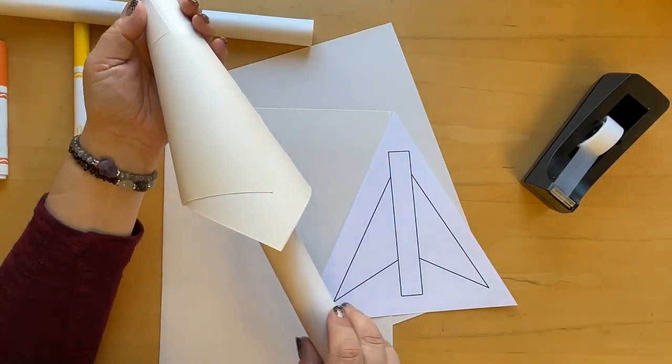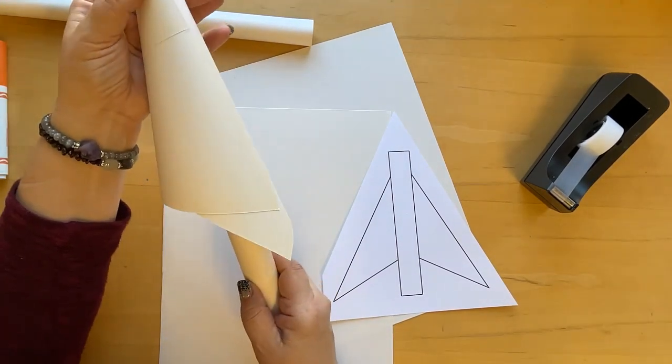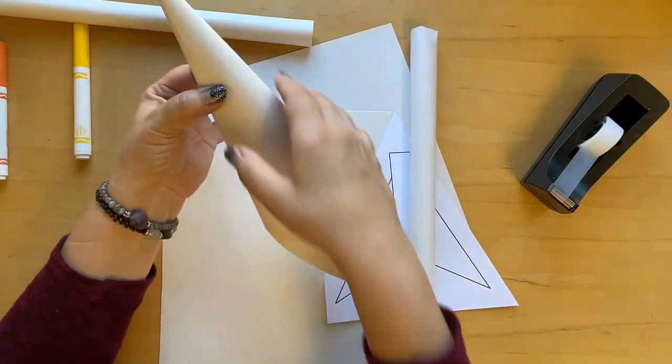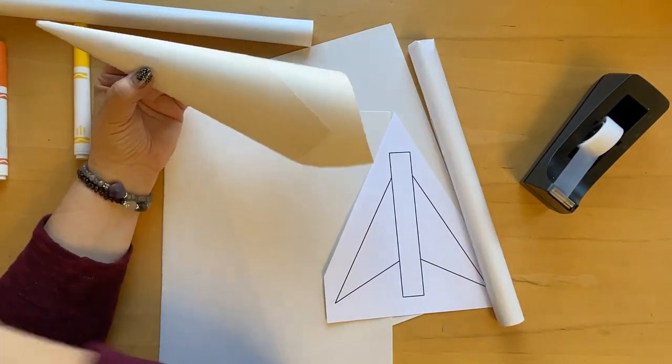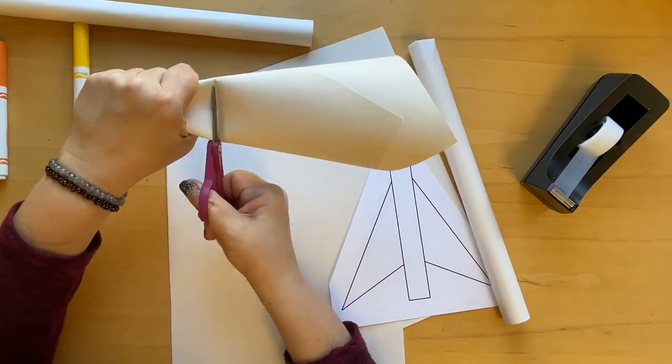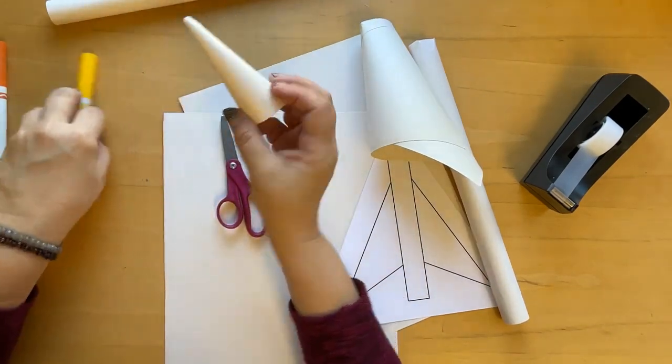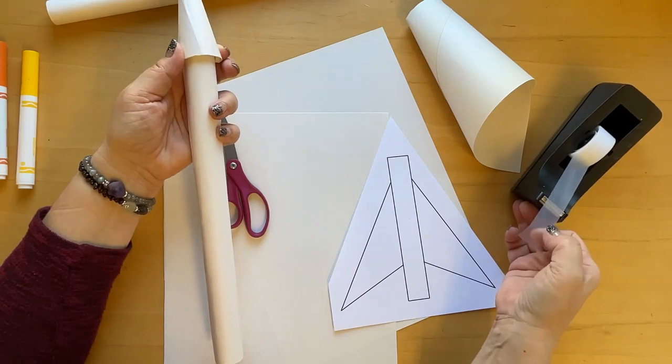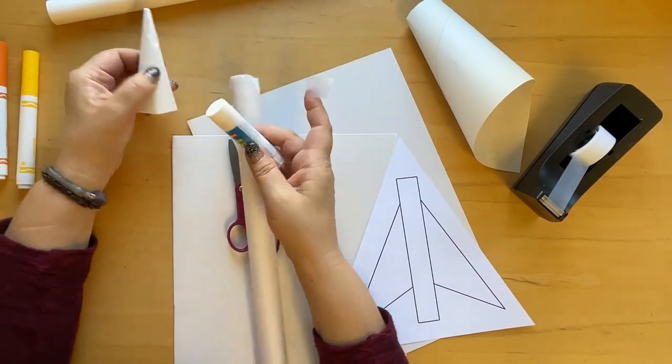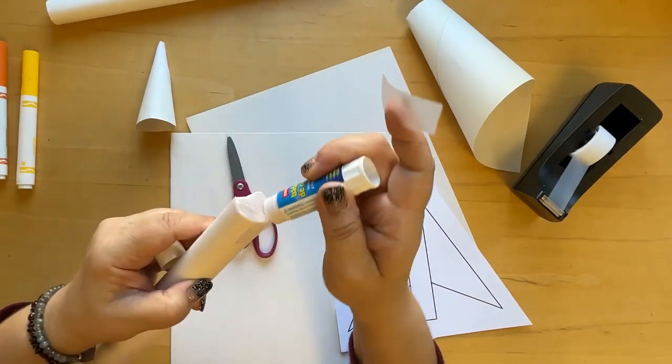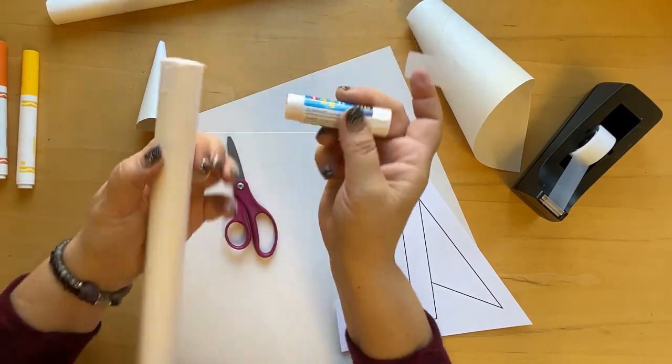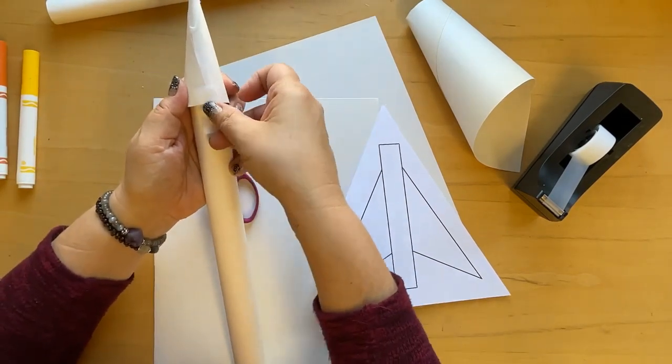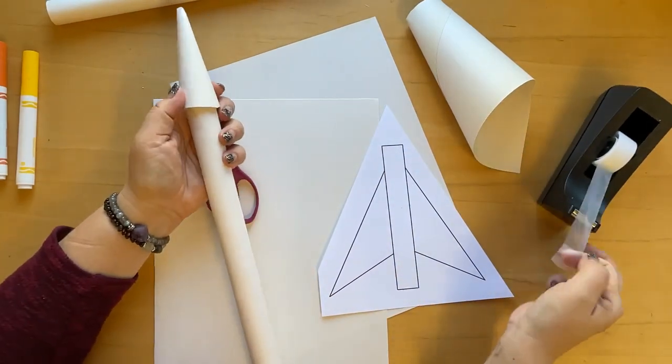And then go ahead and put your rocket body in and see where it comes to. It's about right there on mine. So I'm going to cut this just about a little bit below where the rocket is going to sit. And there's my nose cone. And I'm going to go ahead and put my rocket in there and secure it with some tape. If you have a glue stick, you can put some glue on the top of your rocket just to make sure that it'll stay on. Go ahead and put it there, but then also tape it to make sure that it stays on.